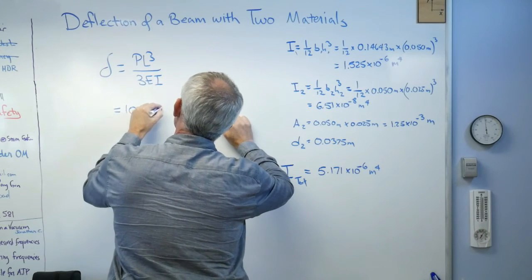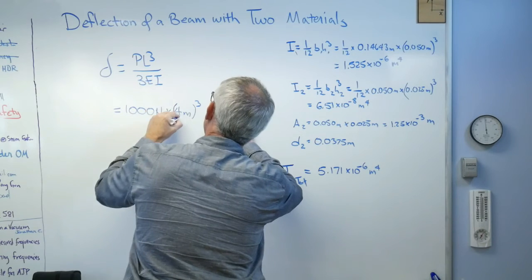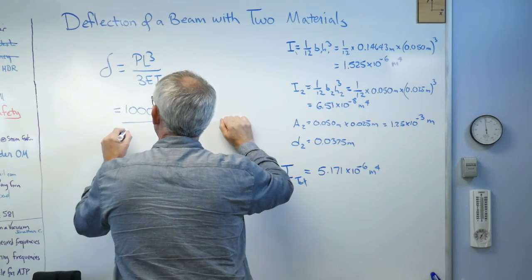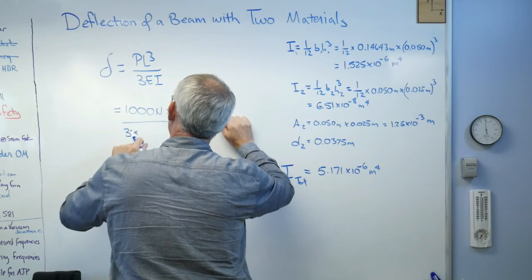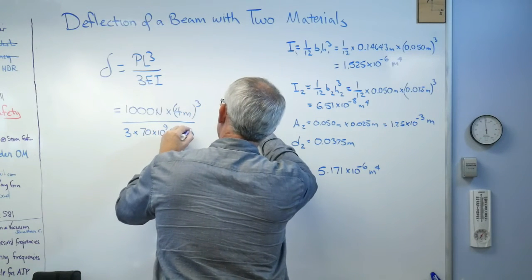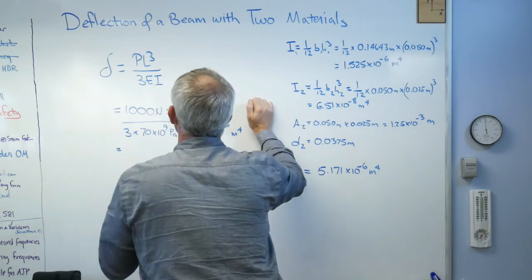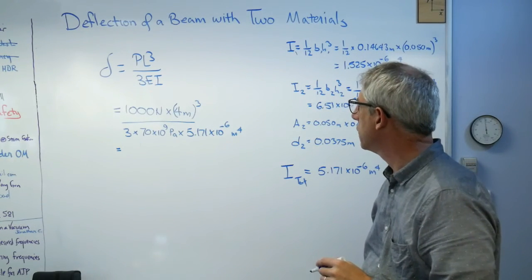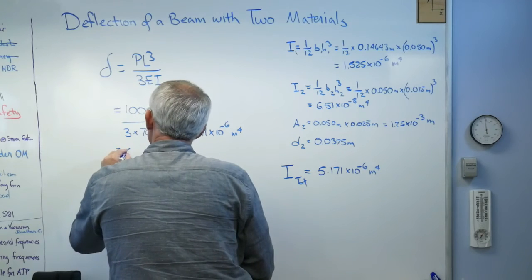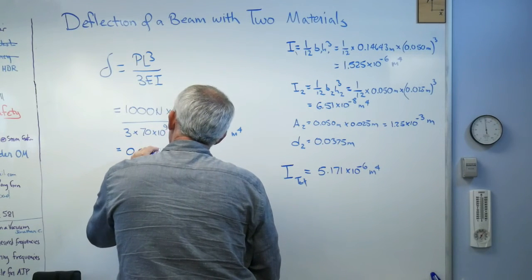So let's do this. I had a load of a thousand newtons times four meters cubed, three times 70 times 10 to the ninth pascals times 5.171 times 10 to the minus sixth meters to the fourth. When you do that, you get 0.05894.